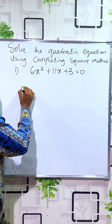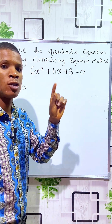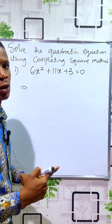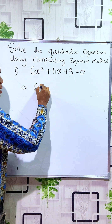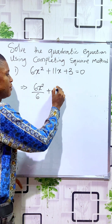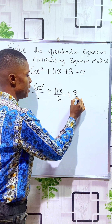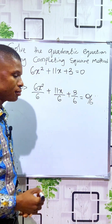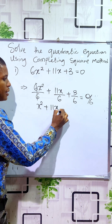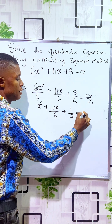The first thing we are going to do to the quadratic equation is to make the coefficient of x squared unity — that is, to make it 1. To do that, we have to divide each term in the quadratic equation by the coefficient of x squared, which is 6. So we have 6x² divided by 6, plus 11x divided by 6, plus 3 divided by 6, equals 0 over 6. When you divide by 6, you have x² plus 11x/6 plus 1/2 equals 0.